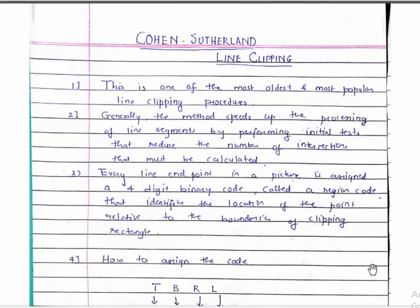Today we'll be learning the Cohen-Sutherland line clipping algorithm. This is one of the most oldest and most popular line clipping procedures. Generally, the method speeds up the processing of line segments by performing initial tests that reduce the number of intersections that must be calculated. Every line endpoint in a picture is assigned a four-digit binary code called a region code.